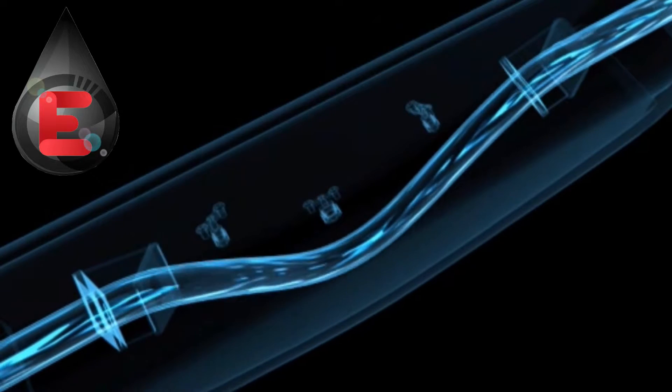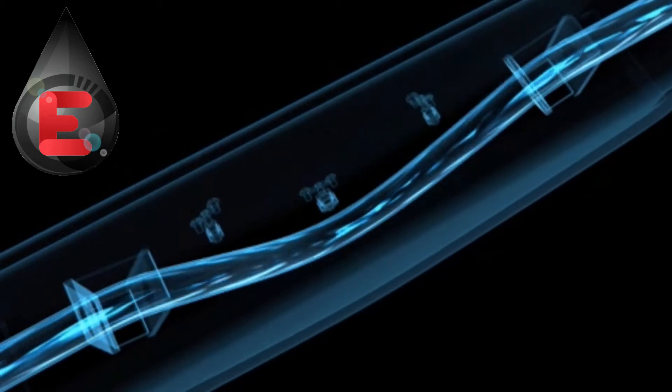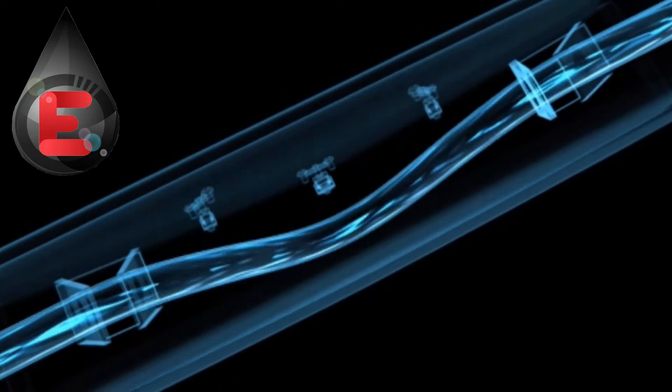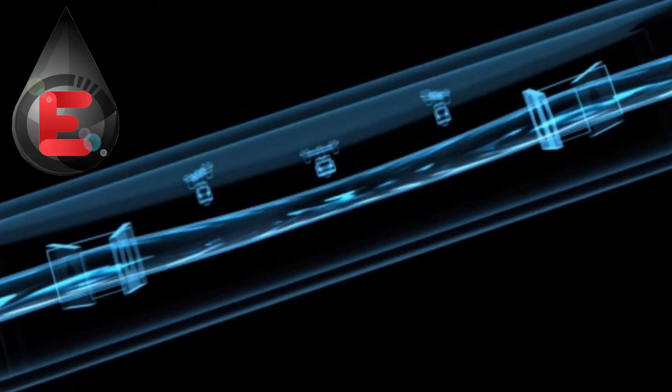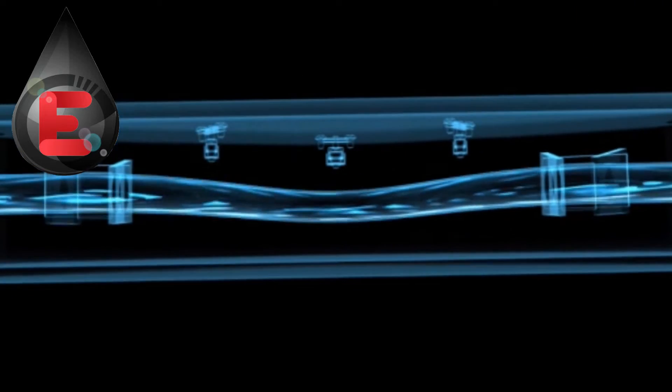As soon as the fluid starts to flow in the measuring tube, however, additional twisting is imposed on the oscillation as a result of the liquid's inertia.